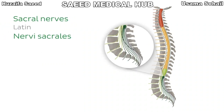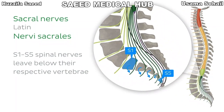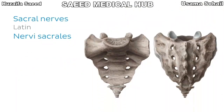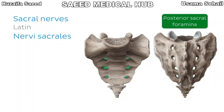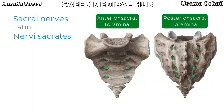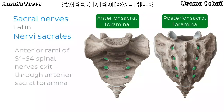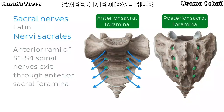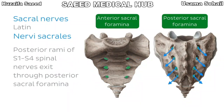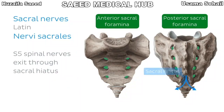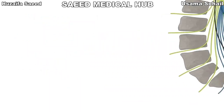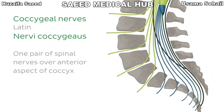The sacral region is a little bit different. The S1 to S5 spinal nerves technically still leave below their respective vertebrae, but it's important to remember that all five sacral vertebrae are normally fused together. So instead of the intervertebral foramina being the final exit space, there are sacral foramina that parts of the spinal nerves travel through. The sacral foramina are on both the posterior and anterior aspects of the sacrum. The spinal nerve enters the sacral foramen as a single structure and then splits into anterior and posterior rami. The anterior rami of S1 to S4 nerves exit through the anterior sacral foramina and the smaller posterior rami exit through the posterior counterpart. The S5 spinal nerves exit through the sacral hiatus, which is the inferior opening of the sacrum. Lastly, we have the coccygeal region — only one pair of nerves leaves the vertebral column over the anterior aspect of the coccyx in spite of it having three to five segments.